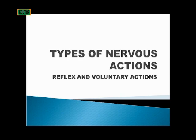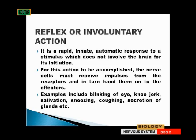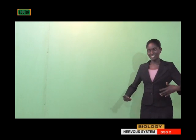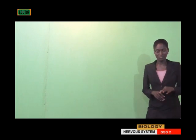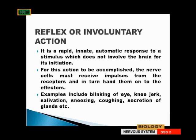We'll be talking about the types of nervous action: the reflex and the voluntary action. Reflex action is an involuntary action — a rapid, innate, automatic response to a stimulus which does not involve the brain for its initiation. It is inborn and natural; you don't think about it before you do it. That is what is called a reflex or involuntary action.